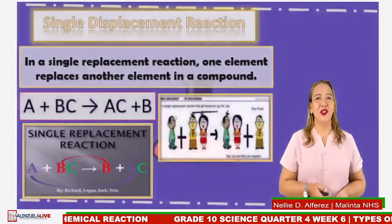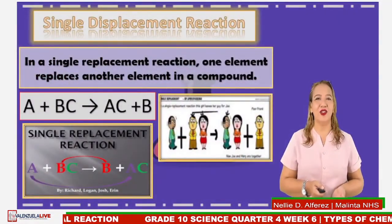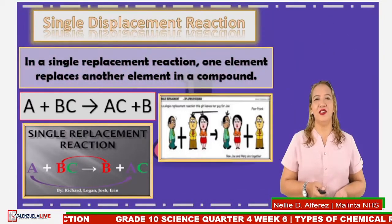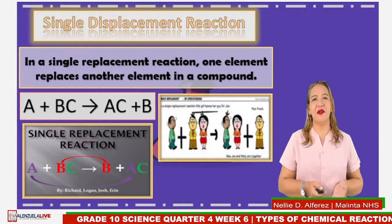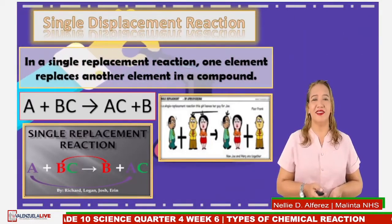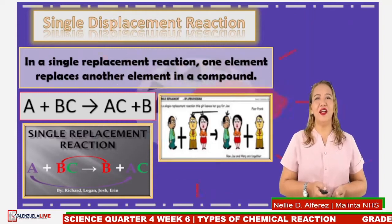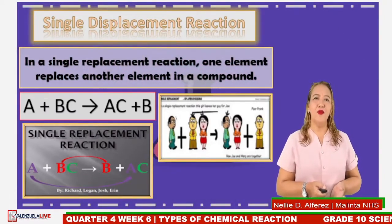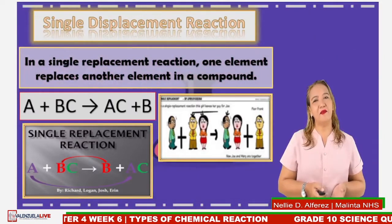The third type is the single displacement reaction, also called single replacement reaction. In a single replacement reaction, one element replaces another element in a compound. The general equation is: A is added to BC, producing AC and B.